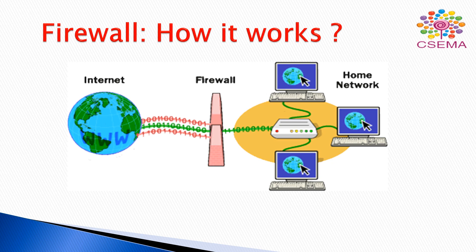As shown in this figure, the data we actually need is represented by green lines, but along with the green data also comes red data, which represents unwanted or malicious content. The firewall is used to filter out this unwanted data, which could be a virus or anything sent by unauthorized persons. After filtering, we get the actual safe data that we requested.